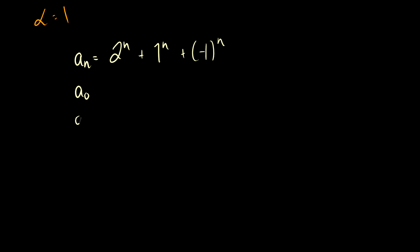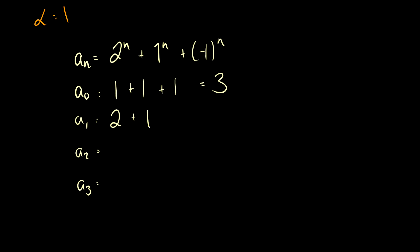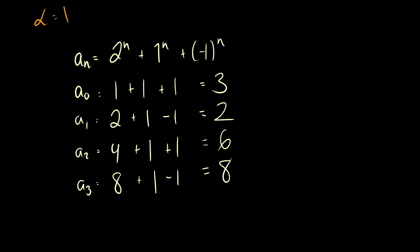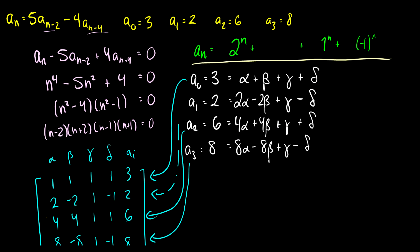Let's verify by checking a_0, a_1, a_2, and a_3. a_0: 2^0 + 1^0 + (-1)^0 = 1 + 1 + 1 = 3. a_1: 2^1 + 1^1 + (-1)^1 = 2 + 1 - 1 = 2. a_2: 2^2 + 1^2 + (-1)^2 = 4 + 1 + 1 = 6. a_3: 2^3 + 1^3 + (-1)^3 = 8 + 1 - 1 = 8. Our a_0, a_1, a_2, and a_3 are 3, 2, 6, and 8 — the same as what we started with.